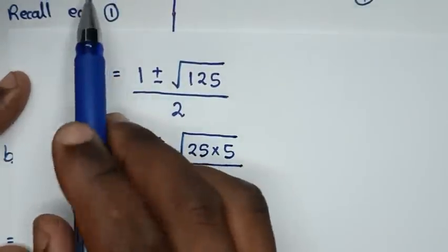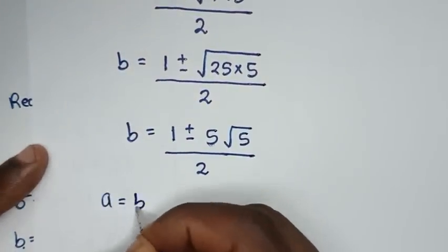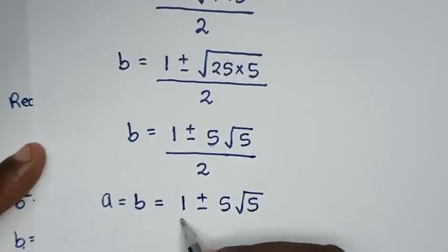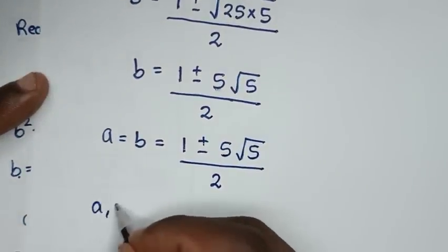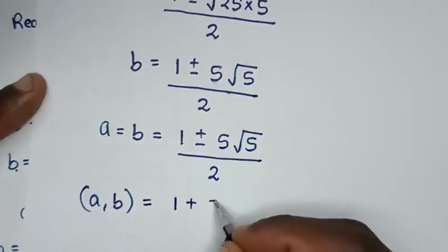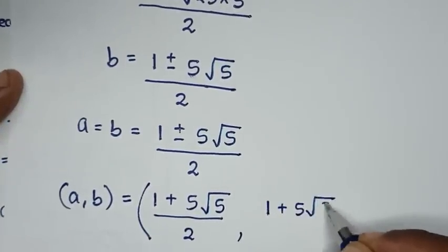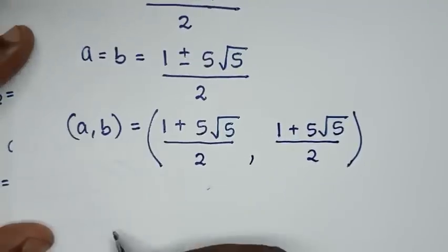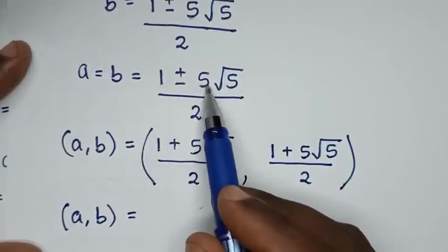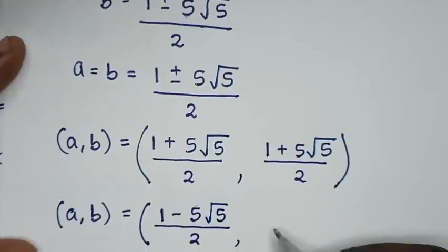Since a equals b from equation 3, both a and b take the same value. The two solutions are: (a, b) equals (1 + 5√5)/2, (1 + 5√5)/2, and (a, b) equals (1 − 5√5)/2, (1 − 5√5)/2.